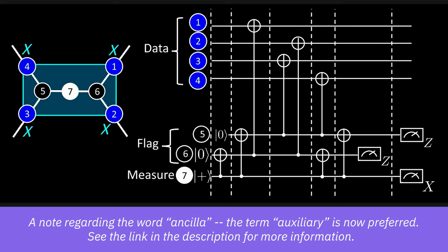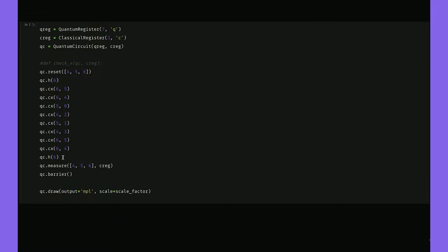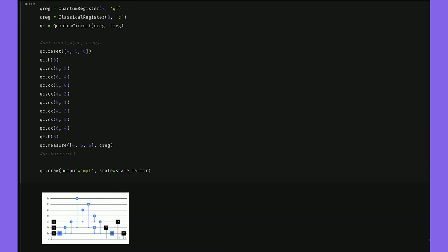Note also that the ancilla qubit number seven is prepared in the plus state and measured in the x basis, whereas normally superconducting qubits are measured in the z basis. Here we create a quantum circuit with a seven qubit quantum register and a three qubit classical register, representing the measurements from just the ancilla and flag qubits we're going to measure. We'll start by resetting all the qubits that we measure, then we'll put the ancilla qubit in a Hadamard state, then do a series of CNOTs, and then in order to do the x measurement of the ancilla qubit we do another Hadamard because we'll measure in the z basis. That gives us a circuit that looks like this.